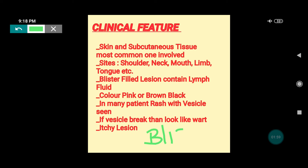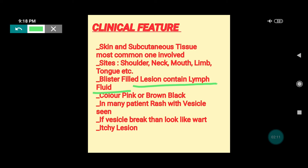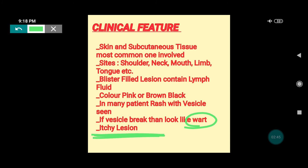The clinical presentation typically involves blister formation over the skin. The blisters are filled with clear lymphatic fluid. Sometimes the blister may change into a pink or brown colored structure. Some patients present with rashes along with vesicles — both can be seen. If the vesicle ruptures, it can look like verruca vulgaris. It is an itchy lesion.